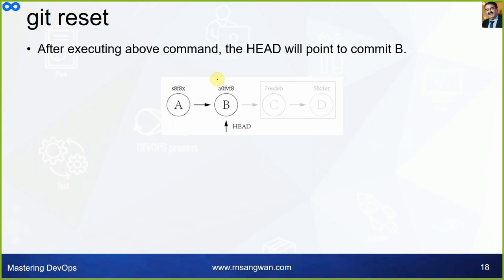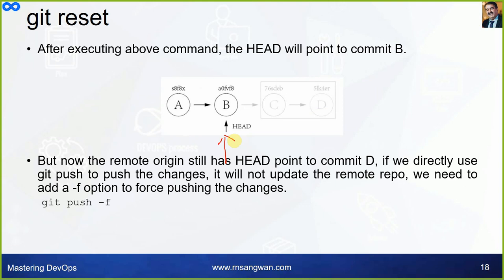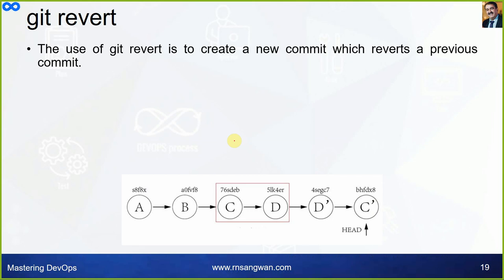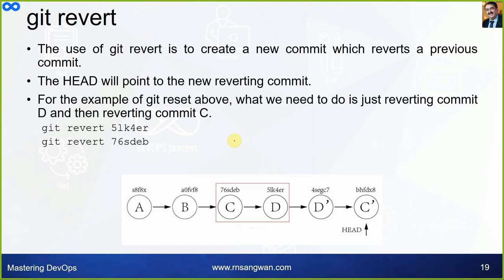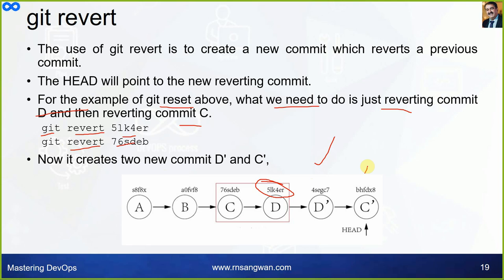After executing git reset, HEAD will point to b. But the remote origin still has HEAD pointing to d. If we directly use git push it will not update the remote repo — we need to add the -f option to force push: git push -f. Git revert: the use of git revert is to create a new commit which reverts a previous commit, and HEAD will point to the new reverting commit. For example, we git revert commit d, then git revert commit c, creating two new commits d' and c' as the revert commits.